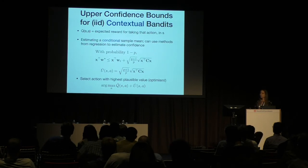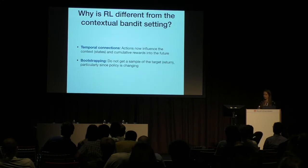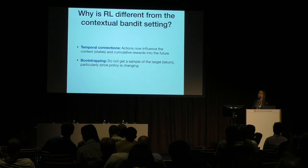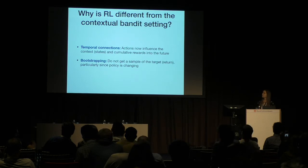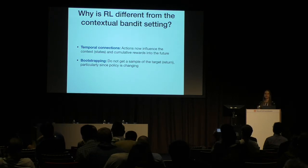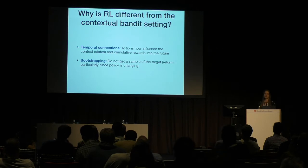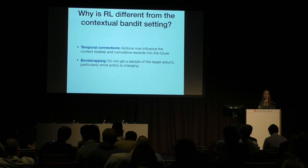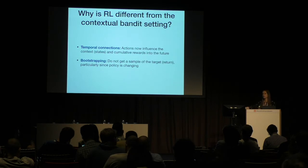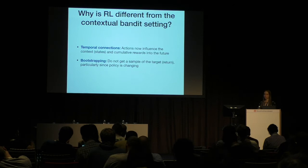That's the primer on upper confidence bounds even with context. Now why is this different in RL? Two main issues. First, actions in RL influence the future context or states and future rewards — which is not true in contextual bandits. Second, we're bootstrapping: we don't get to see a sample of our return directly. In RL we'd need a return sample, and while we could fix a policy and run to completion, typically we bootstrap or let the policy change, which deviates from the bandit setting.